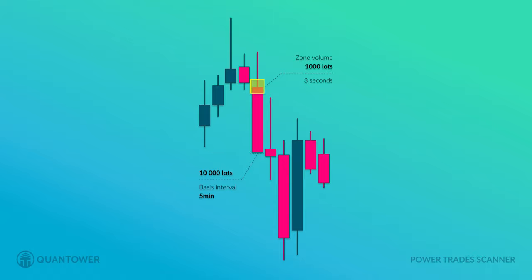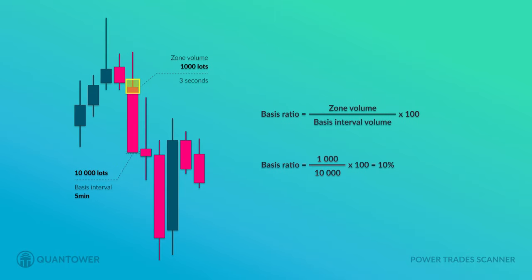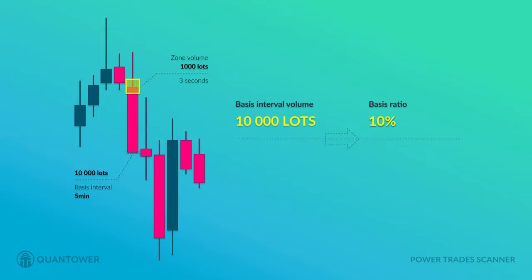As a basis, let's take the volume formed in five minutes — say 10,000 lots. We calculate the basis ratio by taking the zone volume divided by the basis interval volume: 1,000 divided by 10,000, multiplied by 100, equals 10%. In other words, within those three seconds, 10% of the five-minute volume was traded. The conclusion: the volume is strong but not critical, especially when the DOM is dense and trading is intense.